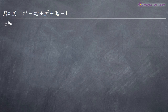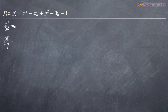The first thing we need to do is take the first order partial derivatives with respect to both x and y. Because this function has two variables, we have to take partial derivatives. So we'll take the partial derivative with respect to x first, and then with respect to y.